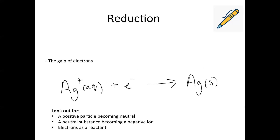Reduction is the opposite — that's gain of electrons; RIG stands for reduction is gain. You're looking for either a positive particle becoming neutral by gaining electrons, or a neutral substance becoming a negative ion because it's gained electrons. If it's a half equation, the electrons will be there as a reactant. In the higher exam, you'll sometimes be shown the overall redox reaction with no electrons visible, so you're really looking for whether the thing's gone from positive to neutral, or neutral to negative.